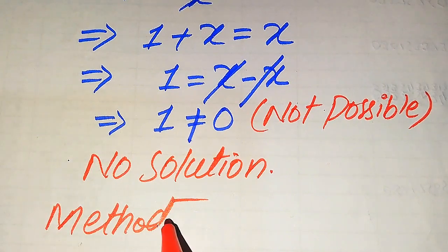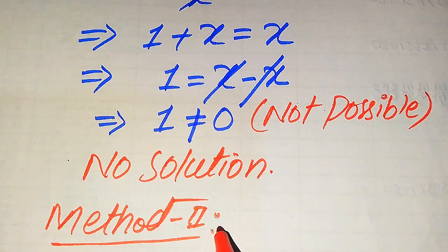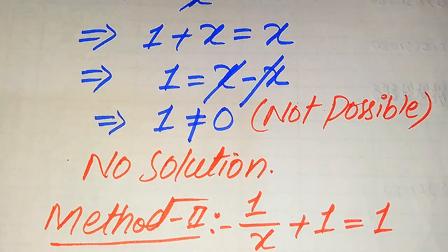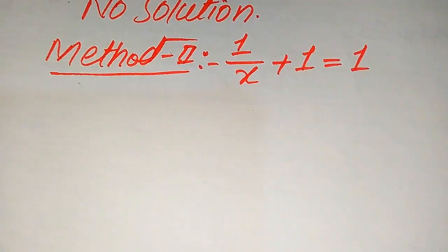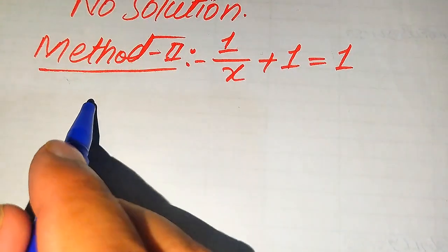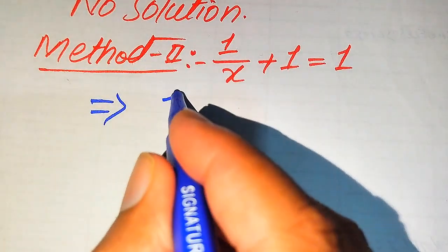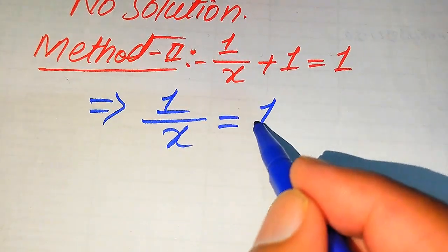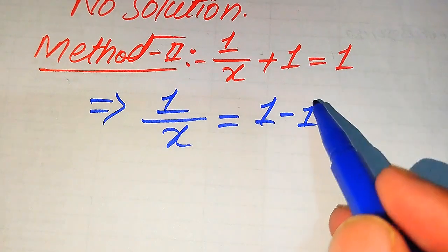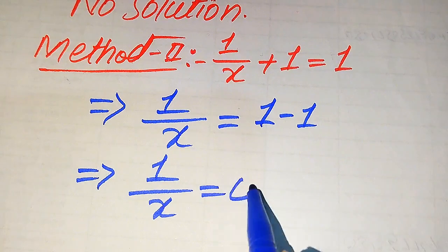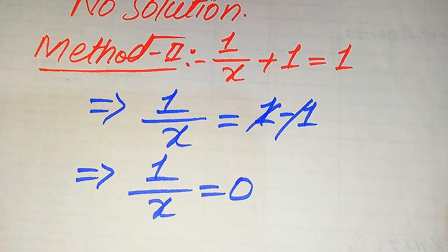In the second method, the given equation is 1 divided by x plus 1 equals 1. Here we move the plus 1 to the right hand side, and it becomes 1 over x equals 1 minus 1. Since 1 minus 1 equals 0, the right hand side becomes 0 as the negative and positive terms cancel.